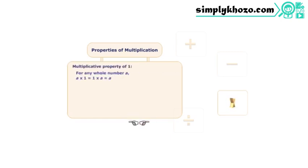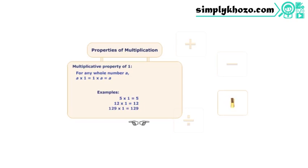When any whole number is multiplied with the whole number one, the result is always the whole number itself. The number one is the only whole number with this property.